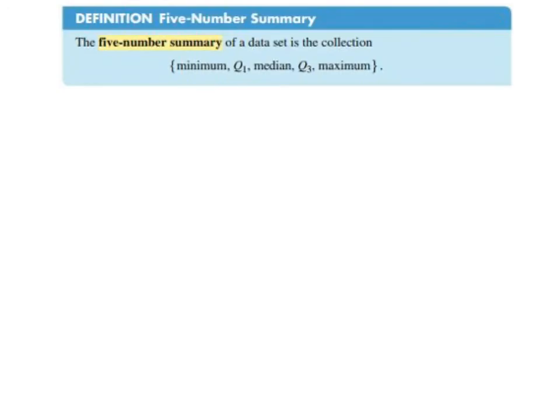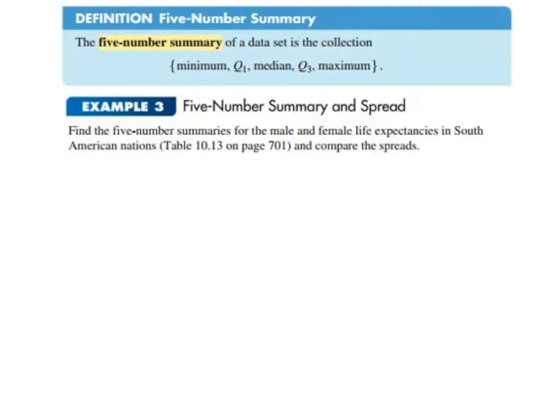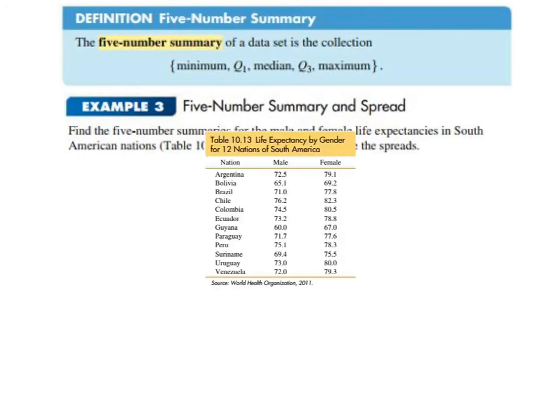We're going to refer to a five number summary of a data set as the collection of five ordered items: the minimum, then the first quartile, then the median, then the third quartile, then the maximum. For our next example, we're asked to find the five number summaries for the male and female life expectancies in South American nations. The first thing we need to do is, after separating them into male and female, list them in ascending order.